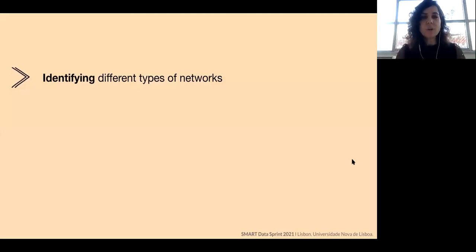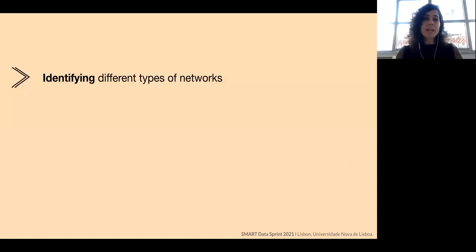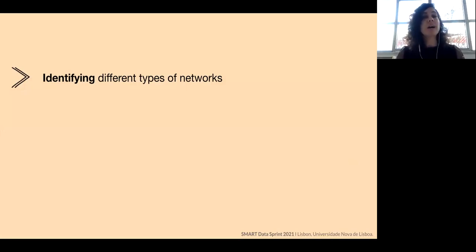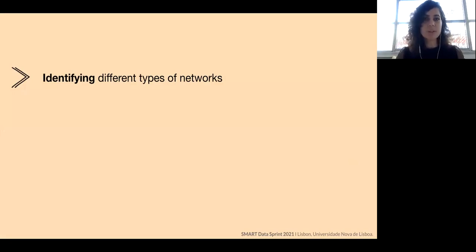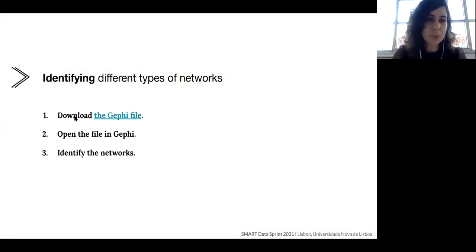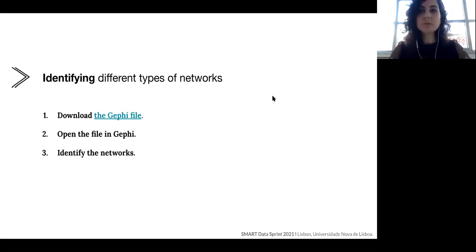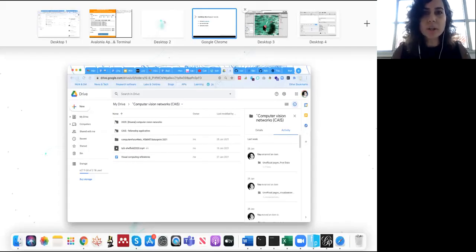Now it's time for some practice. As I said, we are not learning how to use Gephi right now — that is the next practical lab. What we're going to do, based on the information I've shared, is try to identify different types of network that I've already spatialized. I've already set the colors in Gephi. I just want you to open the file and we're going to do it together. Please download this file and open it in Gephi — I'll also open mine.